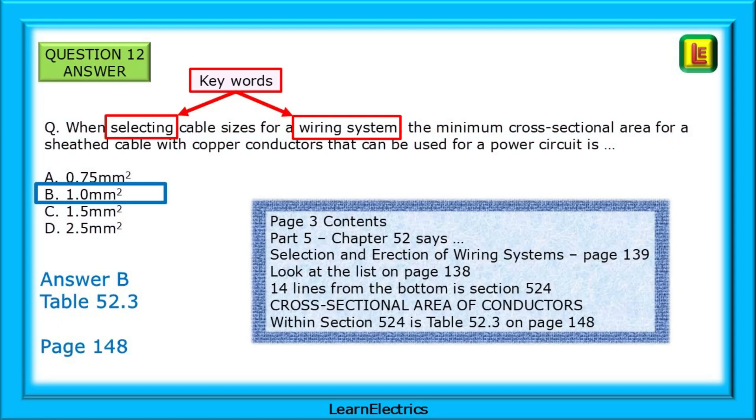Answer B, one square millimetre. Of course, if the circuit is fused correctly. The keywords are selecting and wiring systems. Go to page 3 contents and look at the entry for part 5. Chapter 52 says selection and erection of wiring systems. Go to page 139. Now look at the list on page 138, the page opposite, and 14 lines from the bottom is section 524, which says cross-sectional area of conductors, and within section 524 is table 52.3 on page 148.